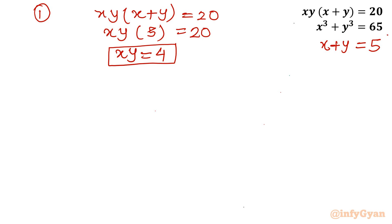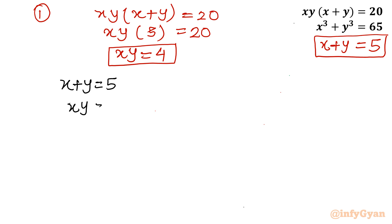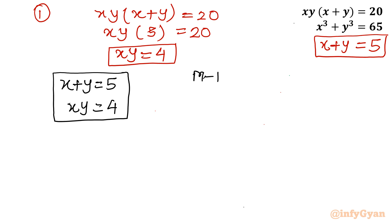Now we have a new, more comfortable system of equations: x + y = 5 and xy = 4. We will solve this using two methods. Method number 1: